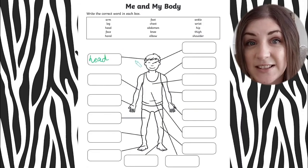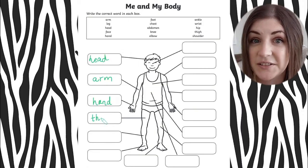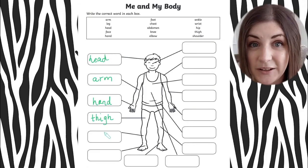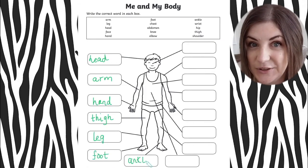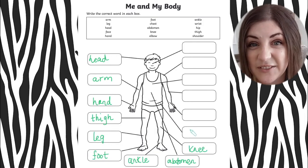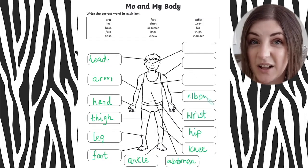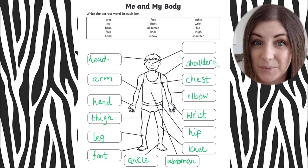The next activity asks children to identify parts of the human body, and we've included the relevant vocabulary in order to do this. The challenge section invites children to think about similarities and differences between humans, for example height or hair or eye colour.